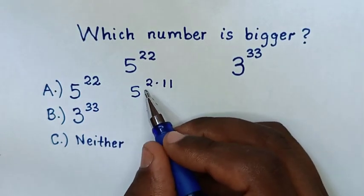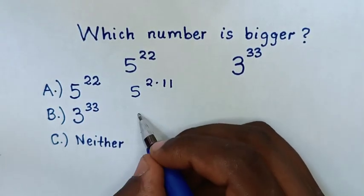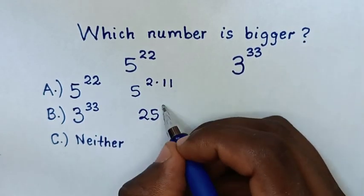Then, we can write 5 to the power of 2 as a base of 25 to the power of 11.